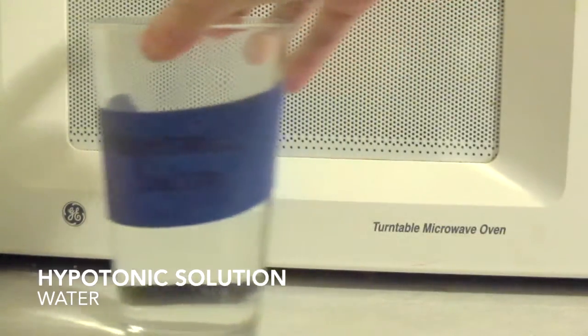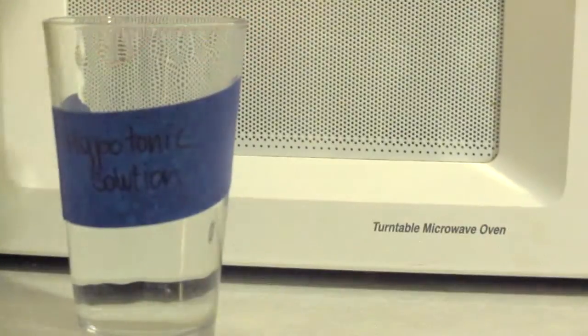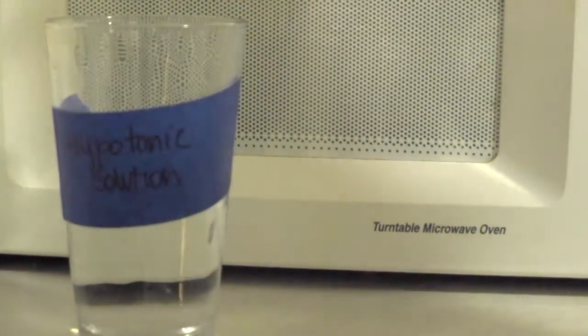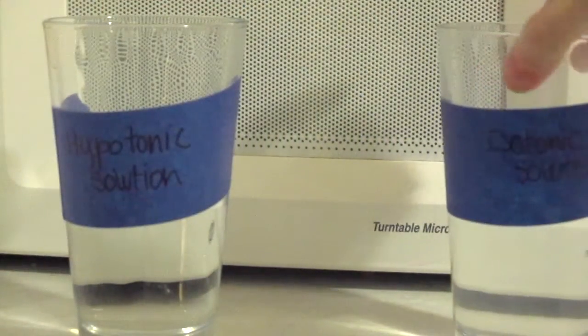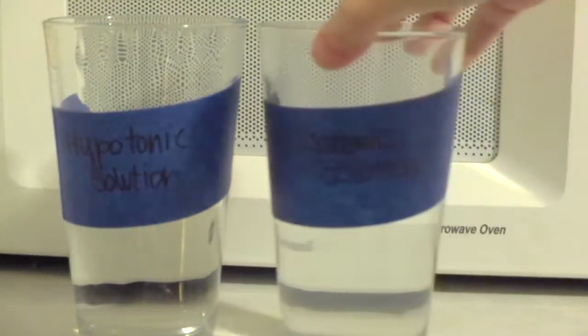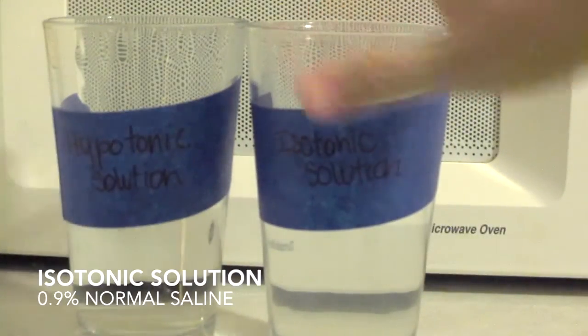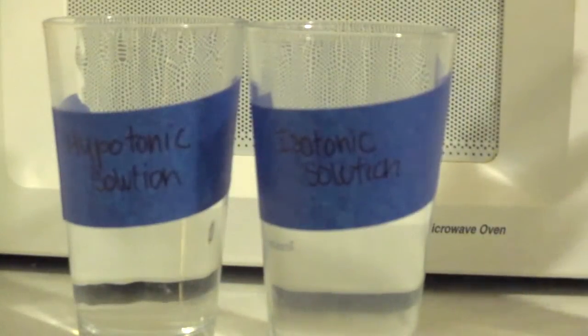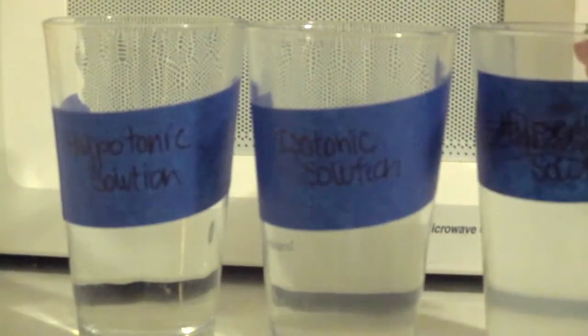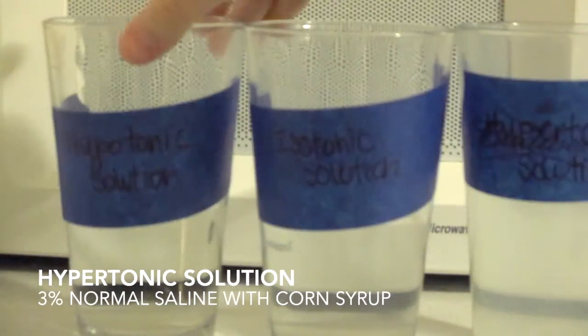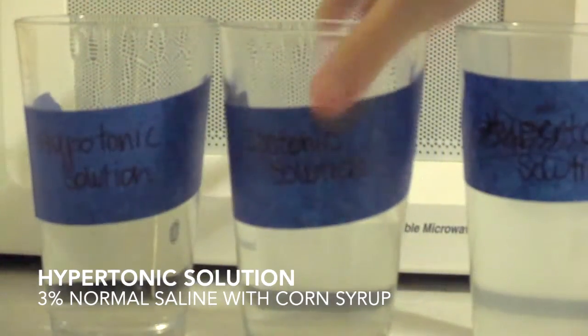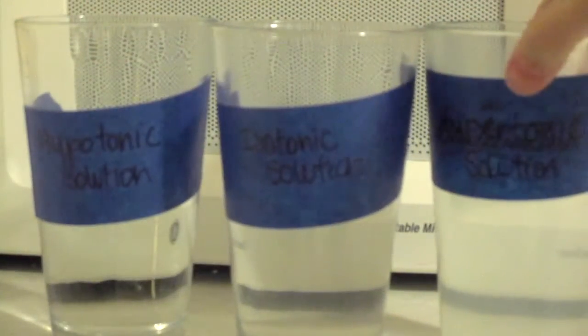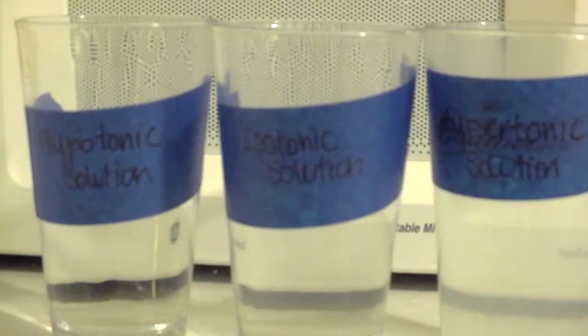The first one is a hypotonic solution and for my hypotonic solution I just use plain water. My isotonic solution I prepared 0.9% normal saline by mixing salt with water and warming it up on the stove. For the hypertonic solution, I prepared a little bit of 3% normal saline and we're going to pour in a bunch of corn syrup with that to make that hypertonic.